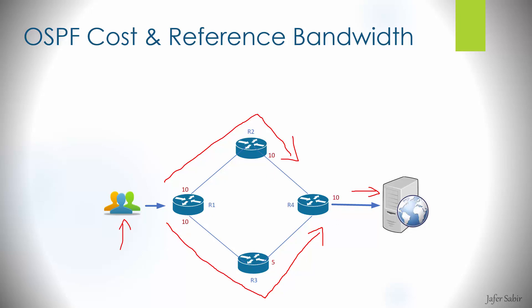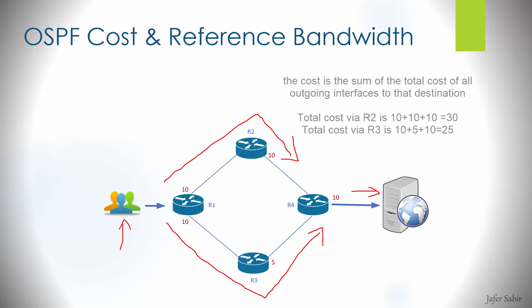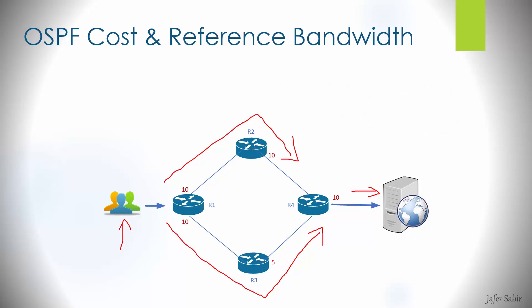If we add the cost in red of the outgoing interfaces to the diagram — it's the outgoing interface cost, also called outbound or egress interface, basically the interface that leaves the router — the path going via R2 is 10 + 10 + 10, which is a cost of 30, whereas the path via R3 is 10 + 5 + 10, which is a cost of 25. So the path via R3 wins and the traffic will traverse via R3.